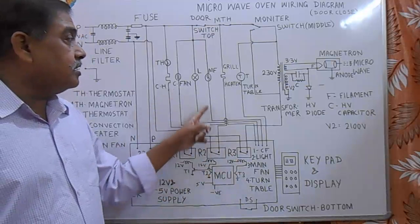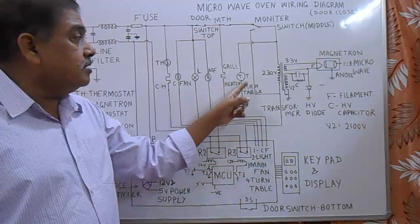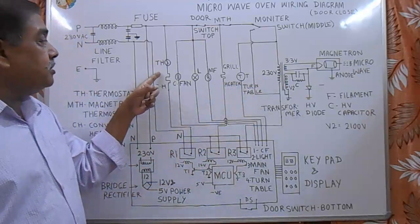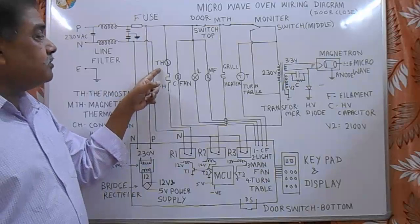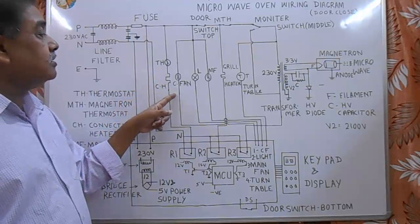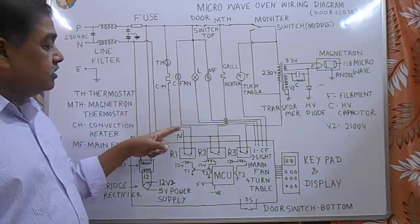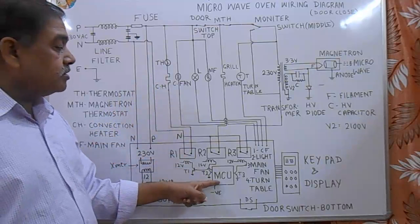Here this is the element for convection heater. It is thermostat for convection heater. It is cooling fan for convection heater. Phase directly goes to convection heater and neutral is controlled by relay R1, which is controlled by micro control unit.